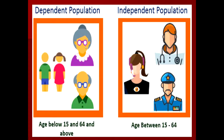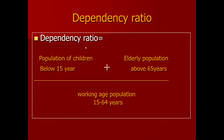According to the definition used by demographers, we calculate the dependency ratio as follows: the dependent population includes those below 15 years of age and those more than 64 years of age, while the economically independent population is between 15 to 64 years of age. The dependency ratio is calculated as the population of children below 15 plus elderly above 65, divided by the working-age population between 15 to 64 years of age.